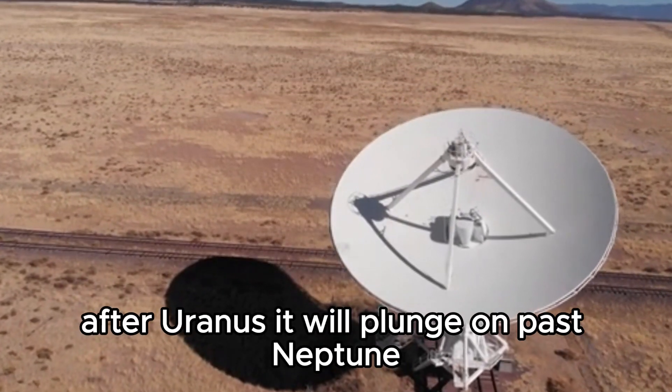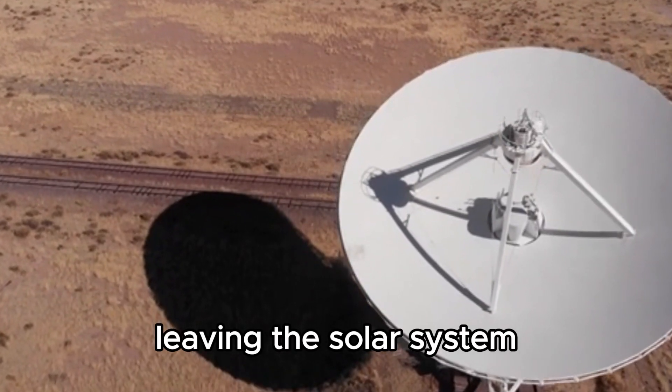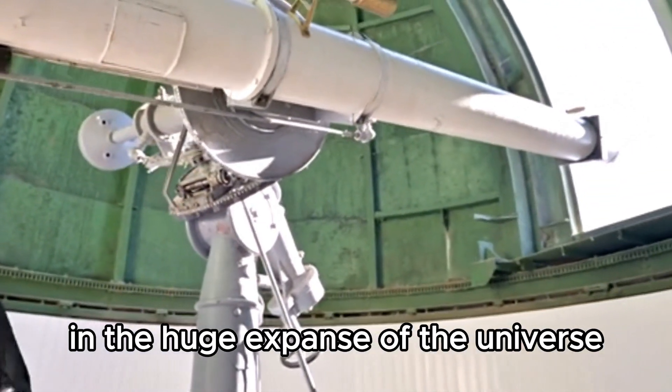In this game of cosmic billiards, after Uranus, it will plunge on past Neptune, leaving the solar system and becoming an interstellar spacecraft in the huge expanse of the universe.